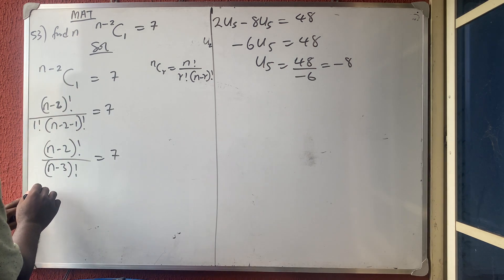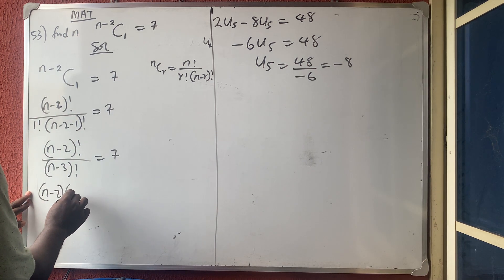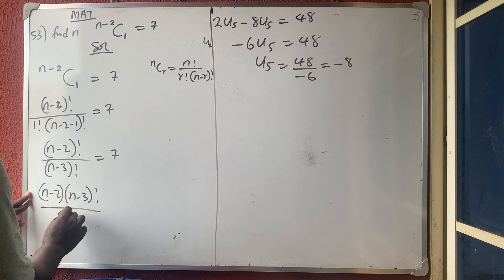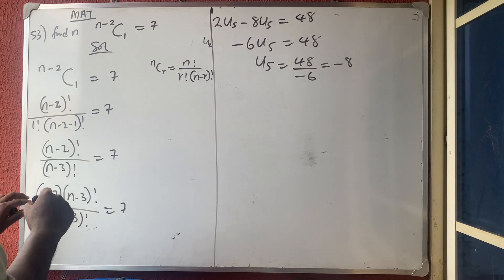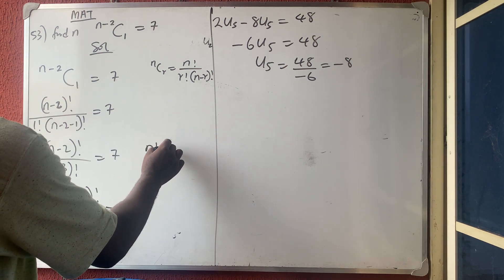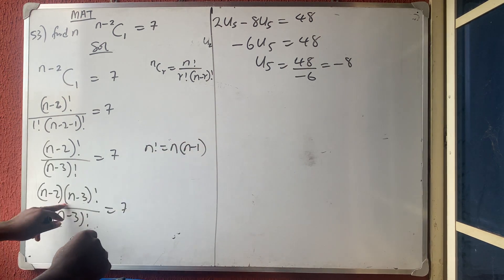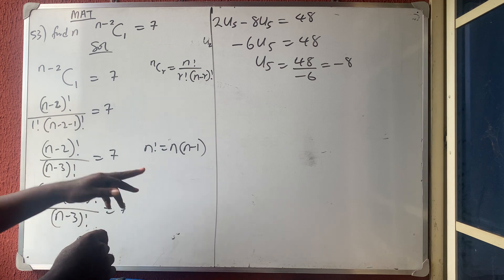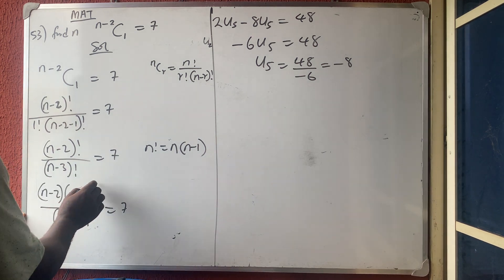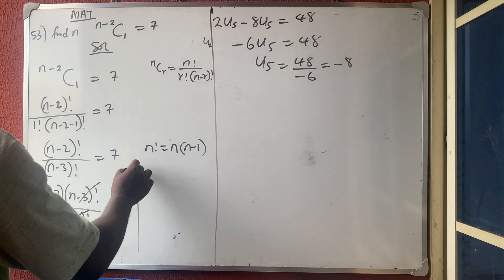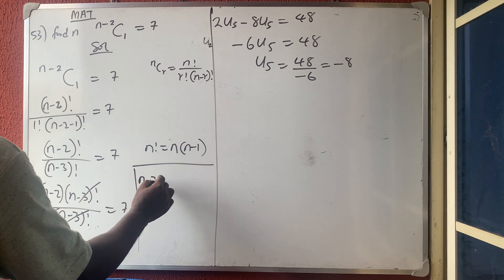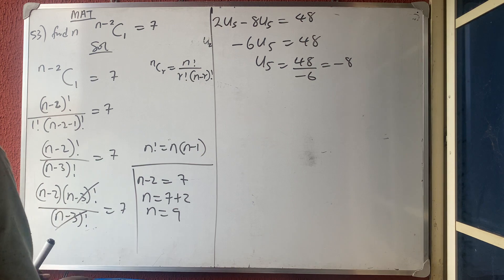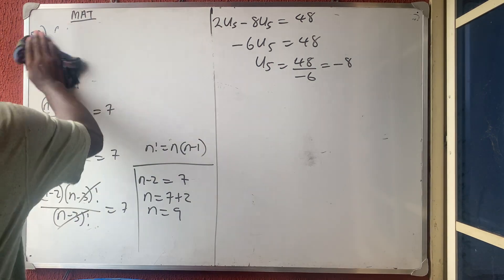Now (n-2)! = (n-2) times (n-3)!, so the (n-3)! cancels, leaving n-2 = 7. Therefore n = 7 plus 2, so n equals 9. As simple as that. Let's move to question 54.